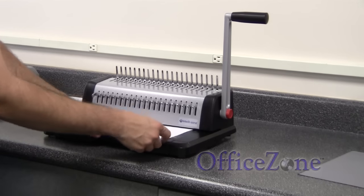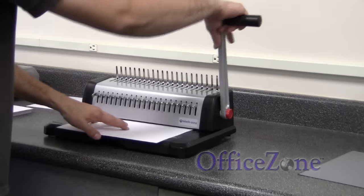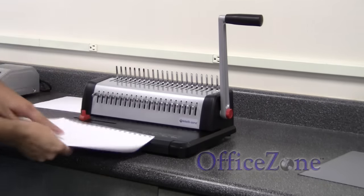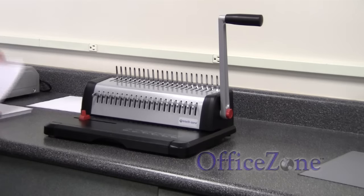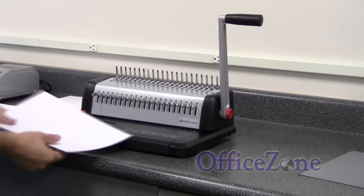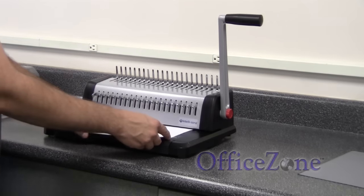You just basically repeat the process until you've punched all the paper. The amount that you can punch really just depends on the machine. Some can punch 10 to 12 sheets. Others can punch up to 20 sheets at a time.